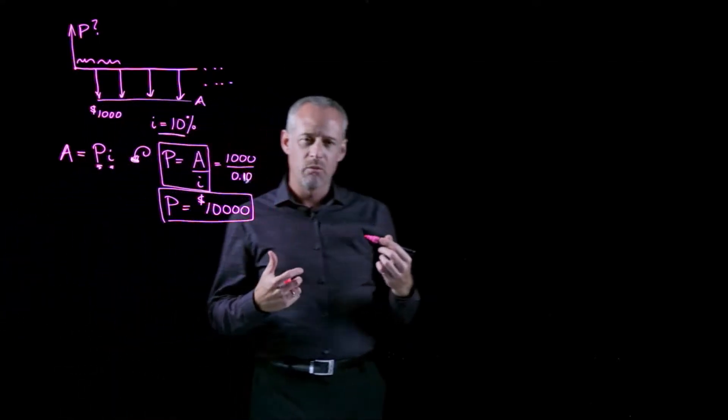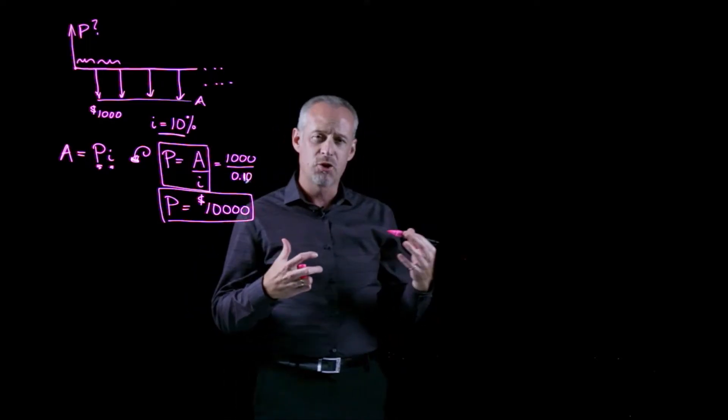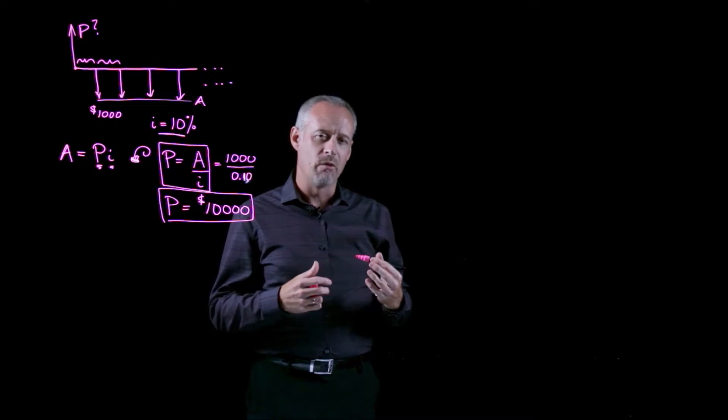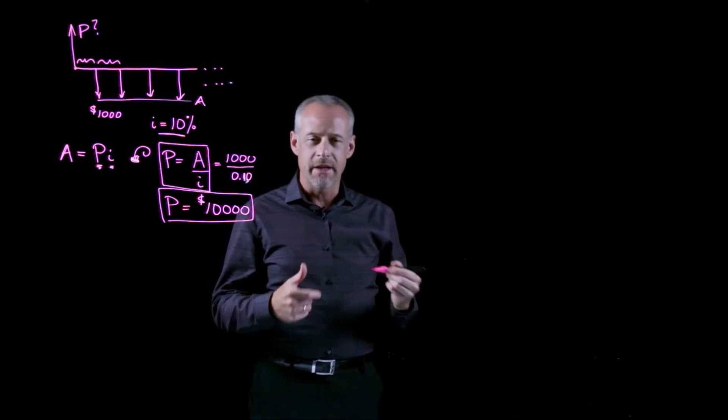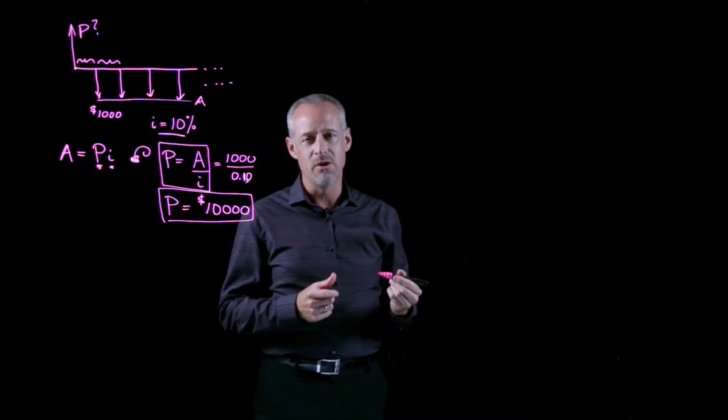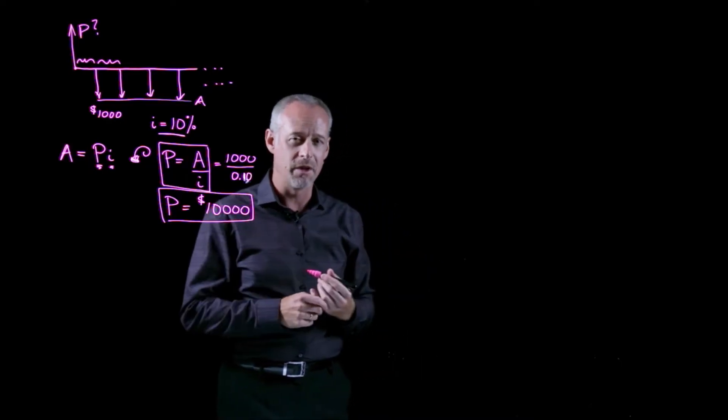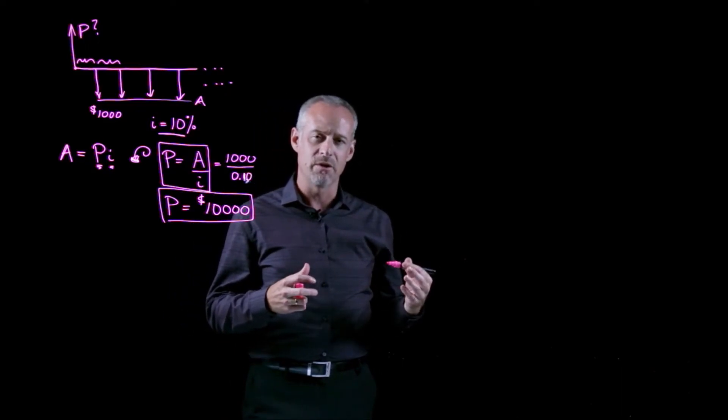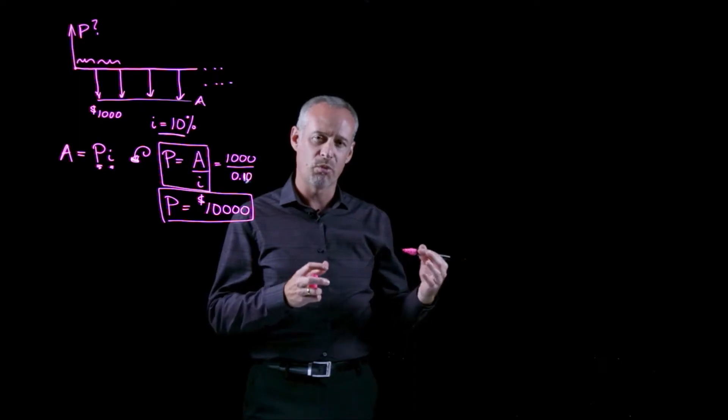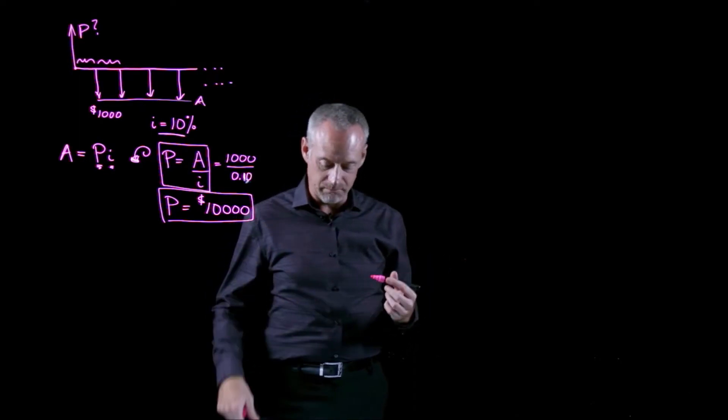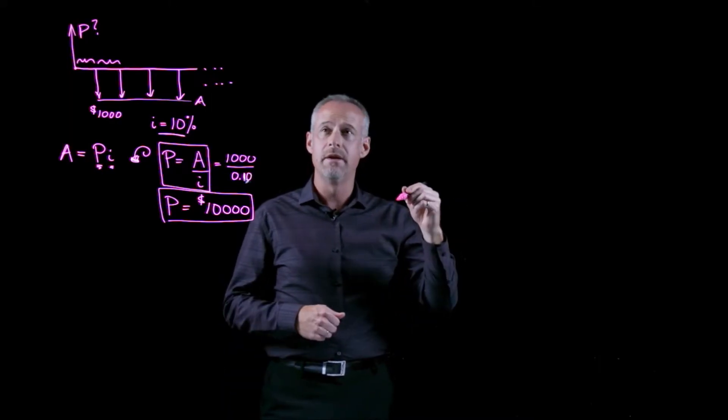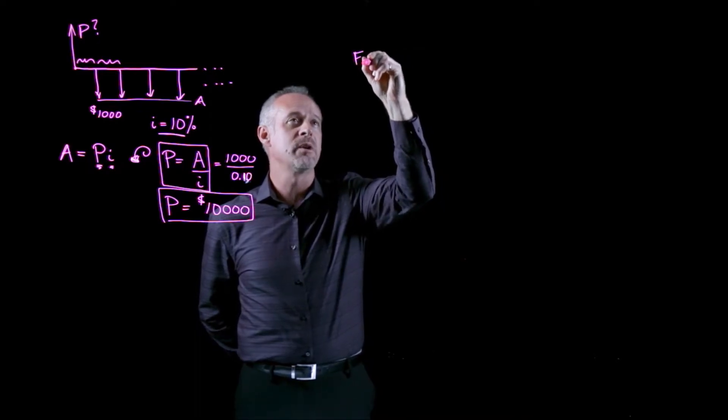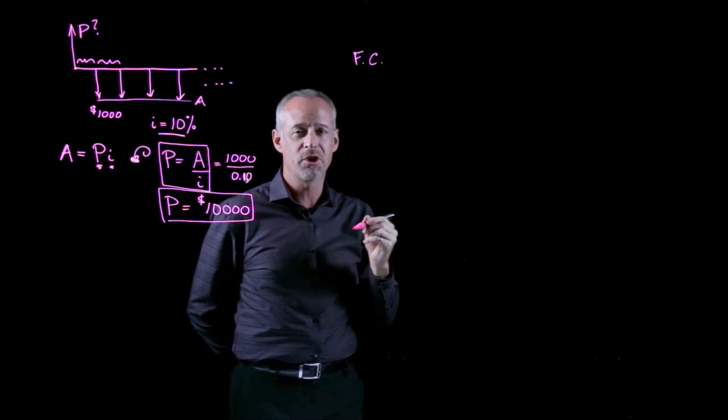So we read in this problem, we have a choice between two projects, project A and project B. And if you remember back to the introduction of this course, the techniques that we use in engineering economics are mainly used for making decisions. And this is a perfect example of that. So we need to use the tools that we've learned, the time value of money calculations, in order to select which project this firm should invest in.